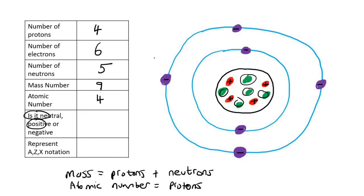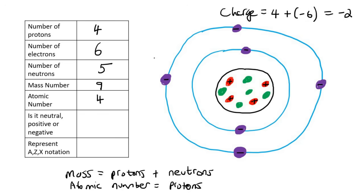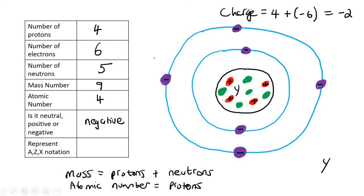Is this atom neutral, positive, or negative? The charge is all the positives (protons = 4) plus all the electrons (6, but negatively charged), so four plus negative six gives us negative two. This is a negatively charged atom. Now represent it using AZX notation. The mass number is nine at the top, and the atomic number is four at the bottom — so it's written as 9 over 4, Y.